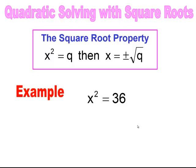So we have an example here. I want to know what the value of x is. In order to find the value of x, I will need to square root both sides. When I square root both sides, I end up with two separate solutions. Because 36 is a perfect square, when I square root it, I end up getting 6 and negative 6.